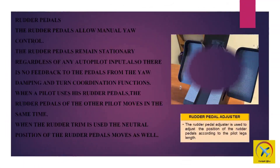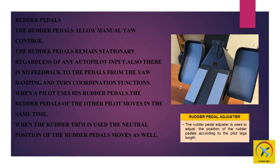The rudder pedals allow manual yaw control. The rudder pedals remain stationary regardless of any autopilot input, and there is no feedback to the pedals from yaw damping and turn coordination functions. When a pilot uses his rudder pedals, the other pilot's rudder pedals move at the same time. When rudder trim is used, the neutral position of the rudder pedals moves as well. The rudder pedal adjuster is used to adjust pedal position according to the pilot's leg length.